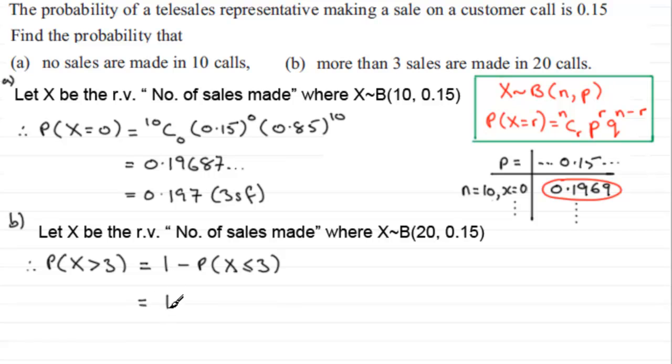So all we've got to do is take a set of tables. I've got one here where I've got an extract from it. Look for p equaling 0.15 where you see n is 20.